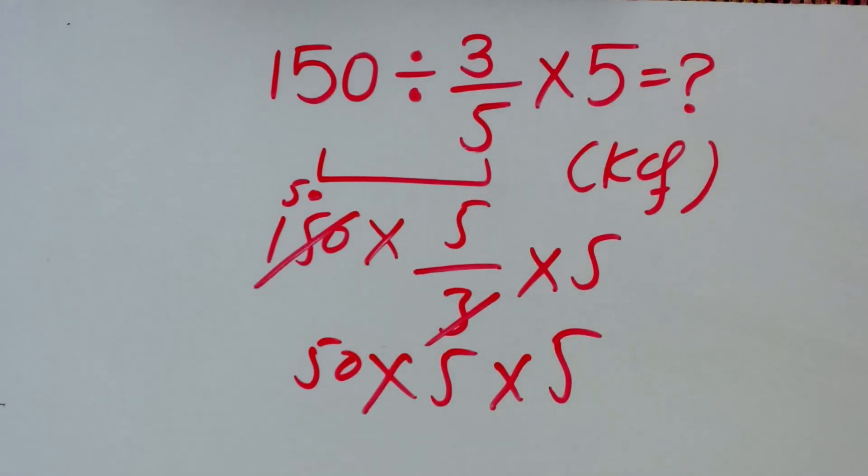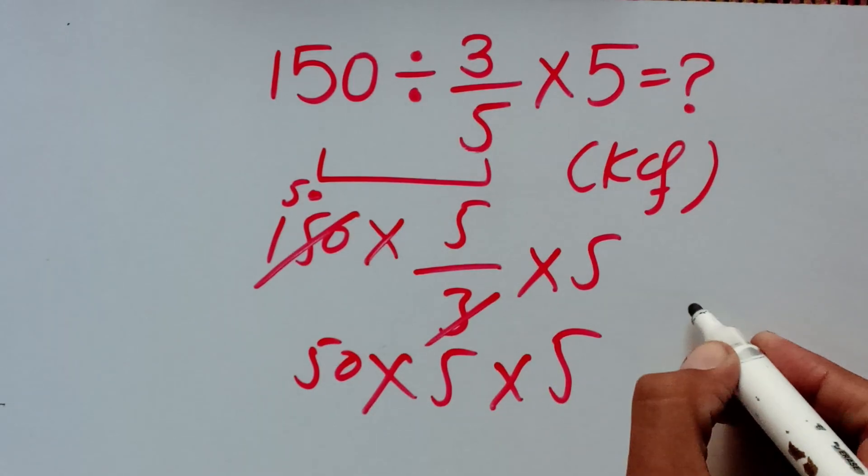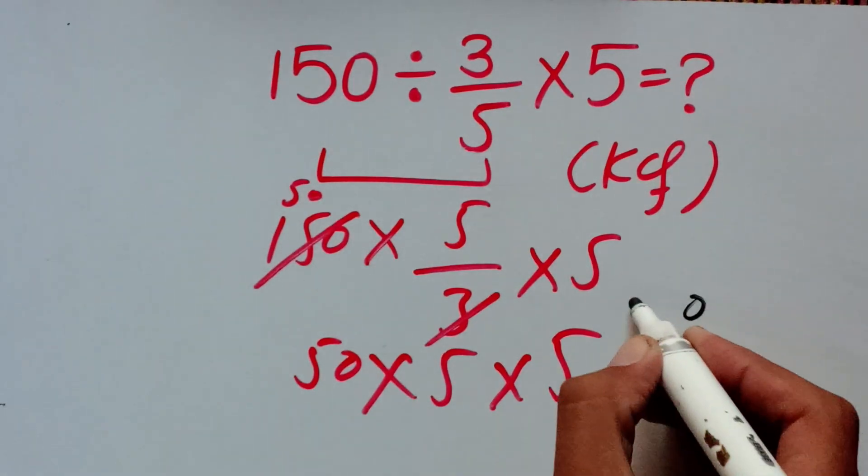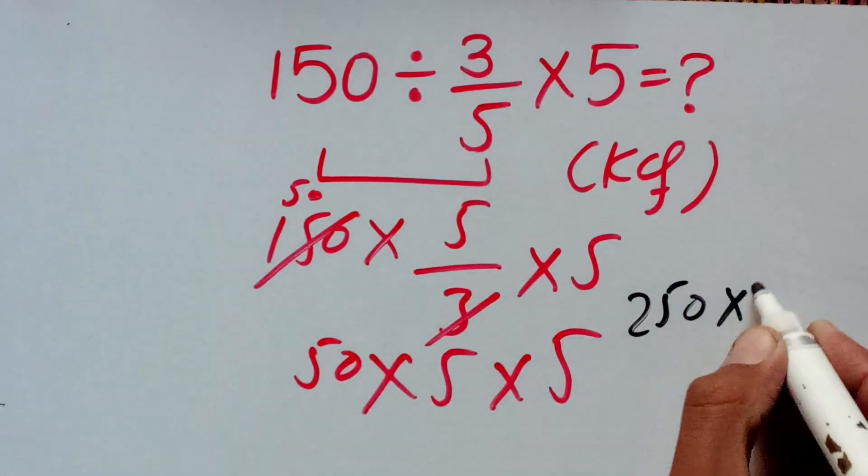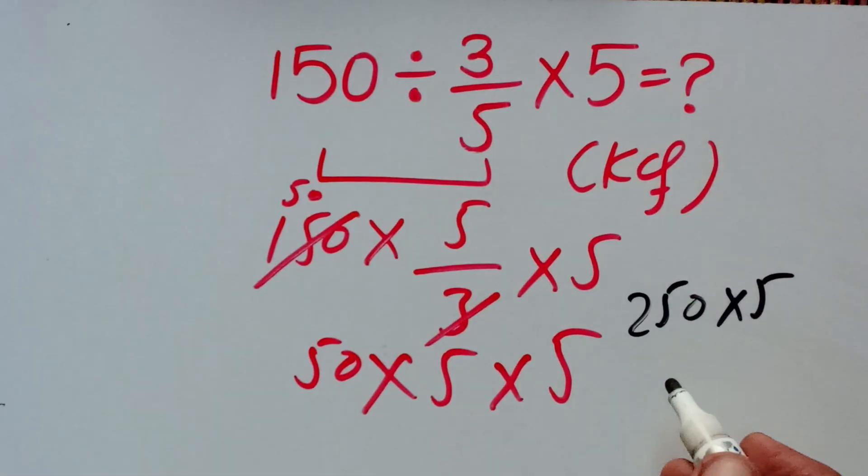In the next step, 50 times 5 equals—5 times 0 is 0 and 2—250 times 5. The final answer is 1250.